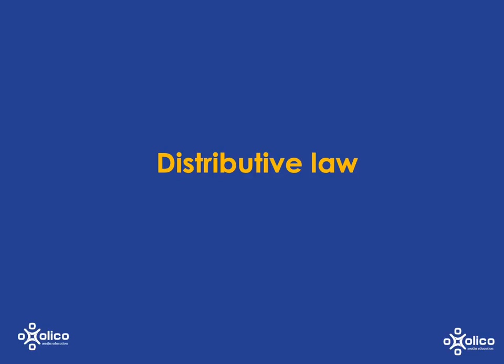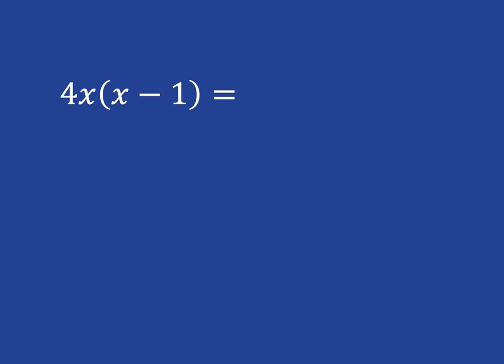We're going to look at a few more examples using the distributive rule. If you're asked to simplify this expression by expanding the brackets, what you need to do is multiply 4x by x minus 1.